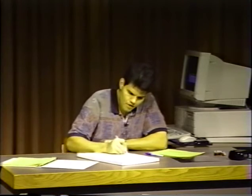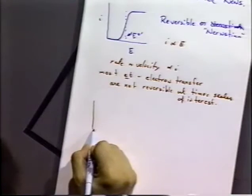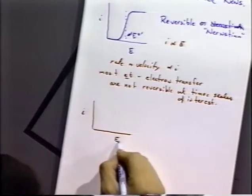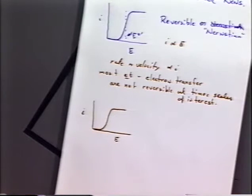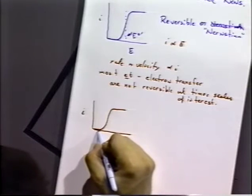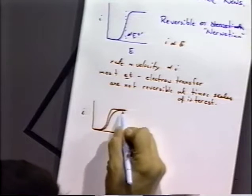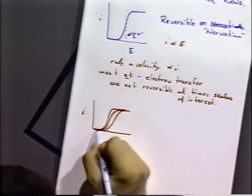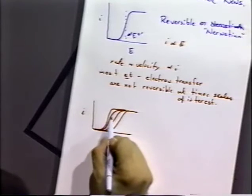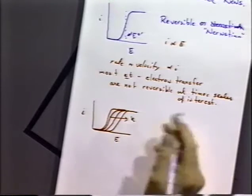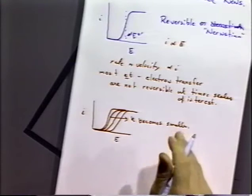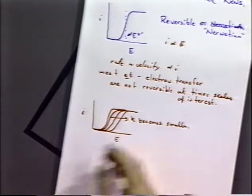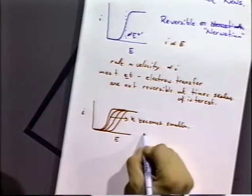When we draw non-equilibrium electron transfer processes and plot them as current-potential curves, we see that from the initial potential curve — which may be reversible — as the electron transfer rate drops off, we see a shift. As K, the rate constant, becomes smaller, we start to see an increase in the overpotential for the electrode reaction. As the rate constant decreases, the overpotential becomes larger.